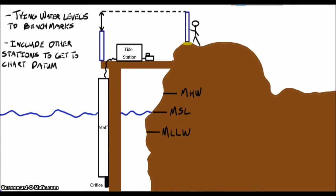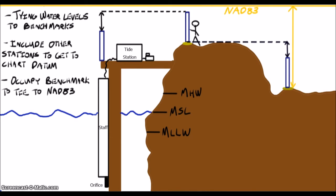To tie these local water level datums into either NAD83 or NAVD88, you'll need to make a GPS measurement at one of the benchmarks to tie the station datum into NAD83, or run a level run all the way to a network that is tied in all the way back to Father Point up in Quebec.